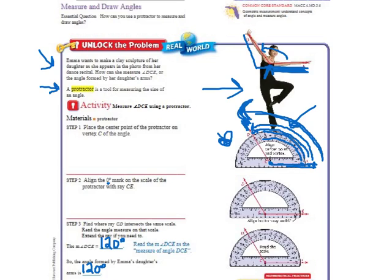So the angle that's formed by Emma's daughter's arms is 120 degrees. Now, if you had an angle that was like this, you would line the vertex up in that little hole right here, but your line that you would put at zero is going this way. So it's opening the opposite way. It's opening like this. So instead of looking at the numbers that are on the inside, when it opens this way, you're going to have to look at the numbers on the top. So you're going to need to make sure that you're looking at the correct numbers. So that is how you use a protractor to find the measure of the degrees in an angle.